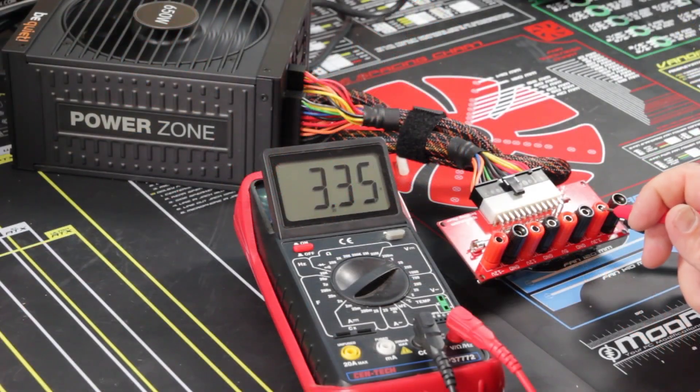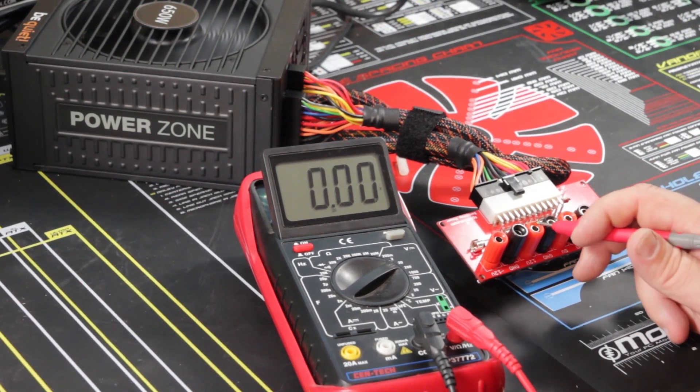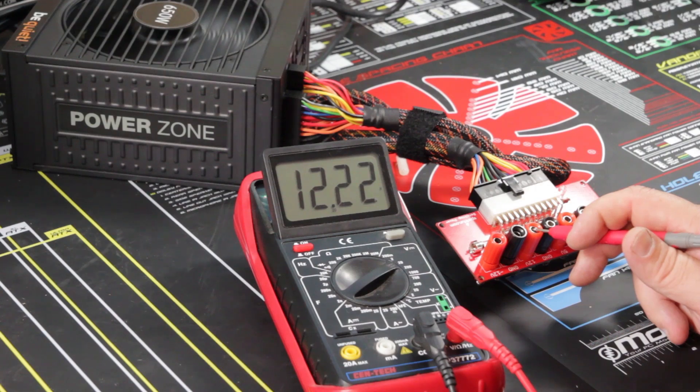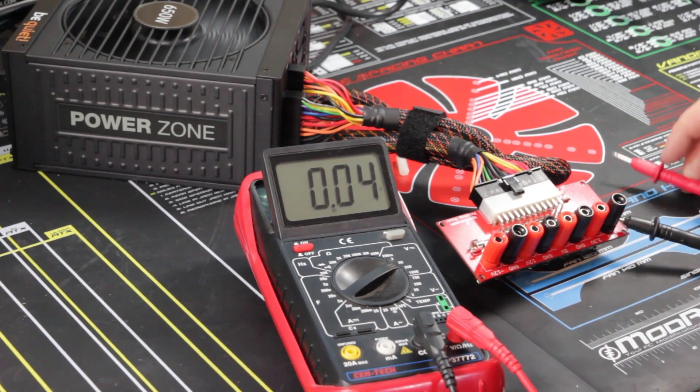Use a multimeter to test each of the power outputs on the circuit board. Here you can see that the 3.3 volt rail is outputting 3.35 volts, the 5 volt rail is reading at 5.11 volts, the 12 volt rail is even at 12.22 volts, and the negative rail is showing negative 11.93 volts.